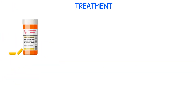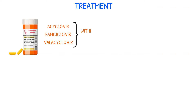Treatment for herpes zoster involves the administration of antiviral medications like acyclovir, famciclovir, or valacyclovir within 72 hours of symptom onset to prevent the development of postherpetic neuralgia.